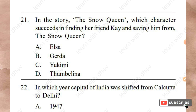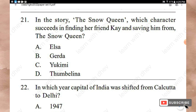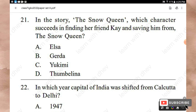Question 21: In the story 'The Snow Queen,' which character succeeds in finding her friend Kai and saving him from the Snow Queen? Options: Elsa, Gerda, Yuki, Thumbelina. The answer is Option B — Gerda.